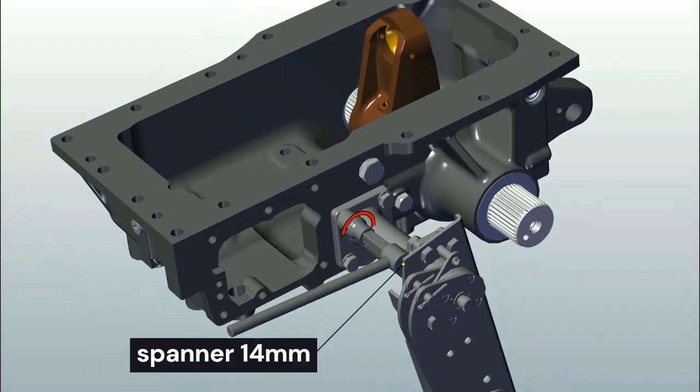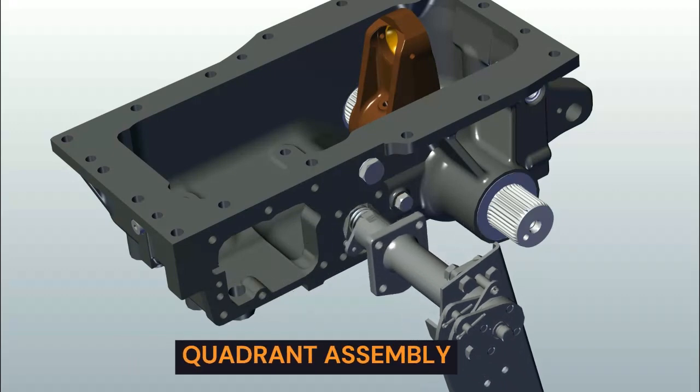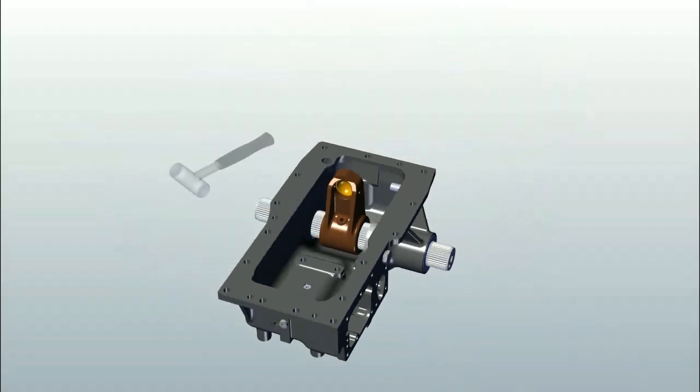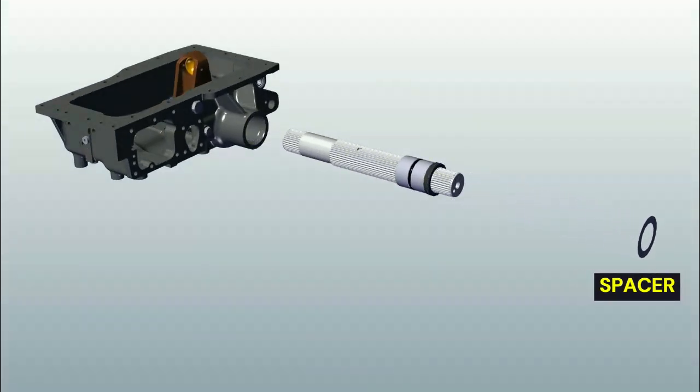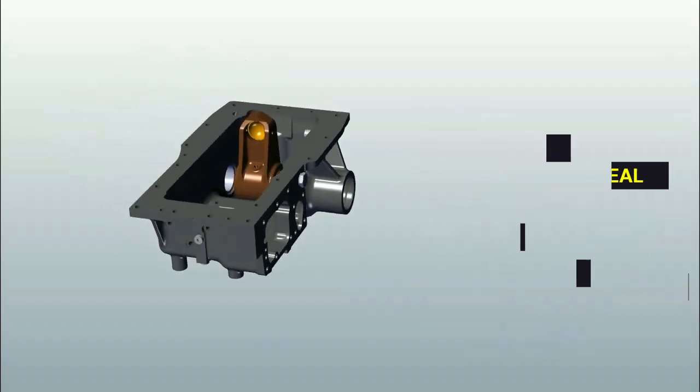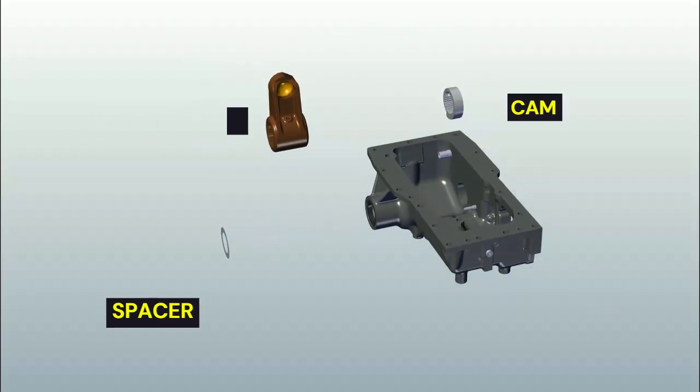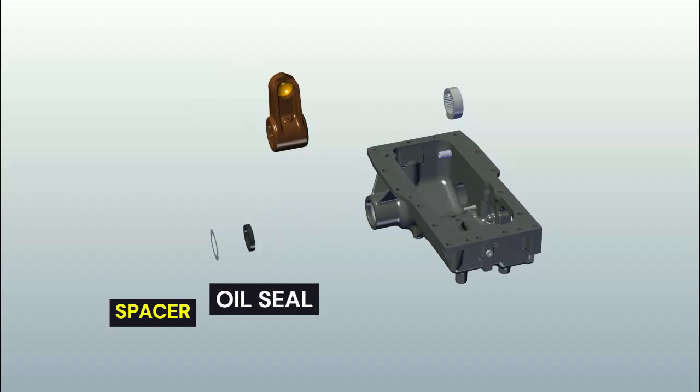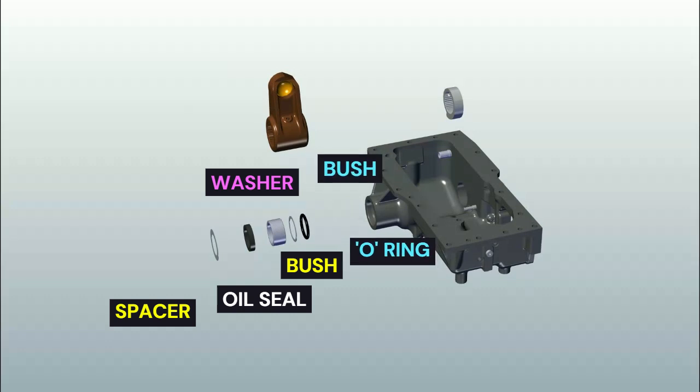Remove 4 numbers M10 bolts. Remove quadrant assembly. Take out rock shaft by hammering, use copper hammer. Remove spacer, oil seal, washer, bush, O-ring, bush. Remove rocker arm cam. Remove spacer, oil seals, bush, washer, O-ring, bush.